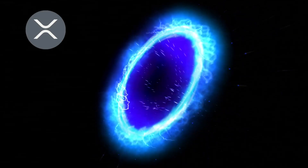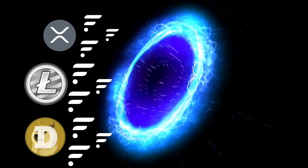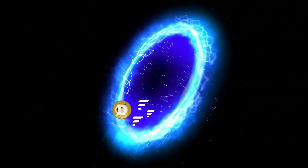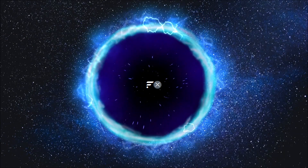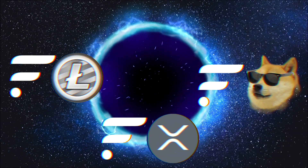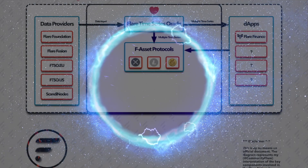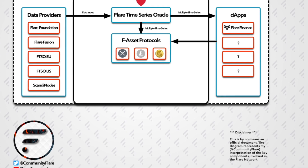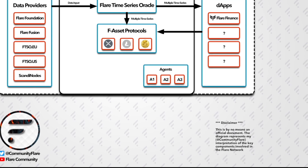This is because to create F-assets, the system needs to hold Spark tokens as collateral at a specific ratio. The current ratio is set at 2.5 times the value of the underlying asset, to be paid in Spark. To facilitate this collateral input, the Flare Network will have agents — which are people or systems — which wish to provide Spark as collateral to receive a small fee in return.